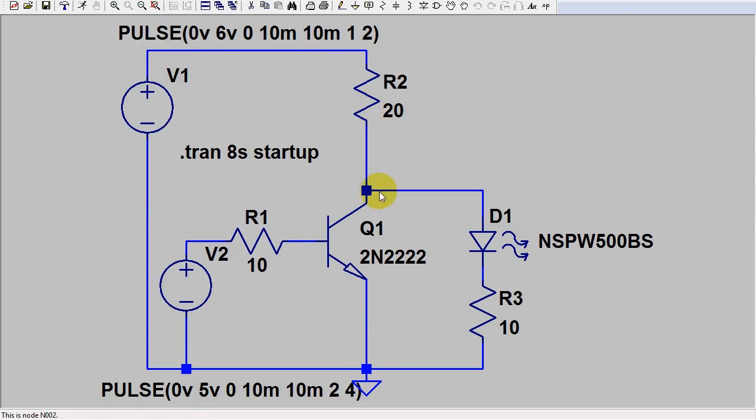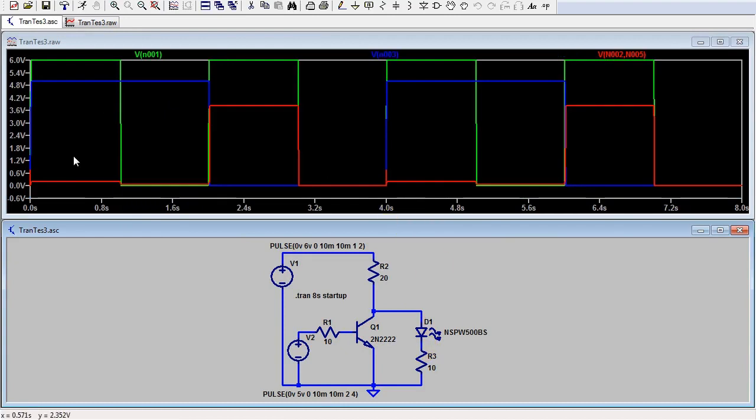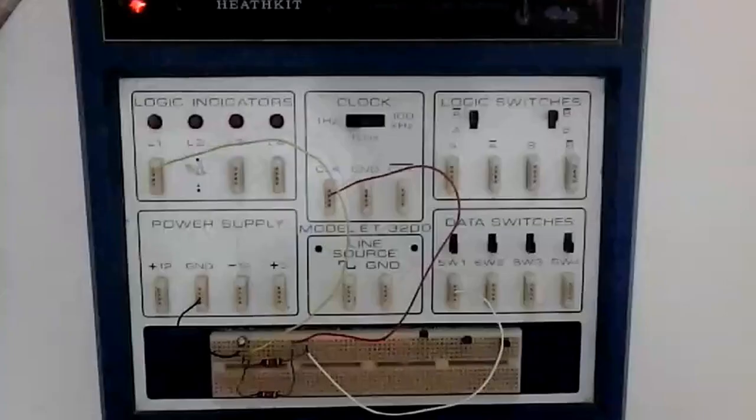This is the third transistor switching configuration. This one shorts out the LED when the control voltage at the base is high. Therefore, this acts as an inverter. As you can see, the LED follows the supply voltage only when the control voltage is low. This configuration will also work in my electronic kit, so let's create this one.